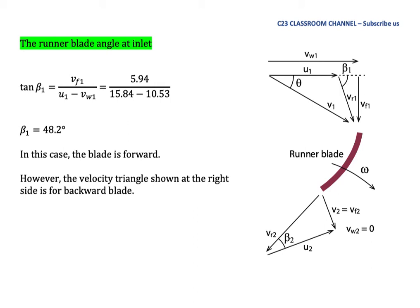Now we are calculating the runner blade angle at inlet. This is our velocity triangle and the runner blade angle is located here. From the velocity triangle, we can write tangent beta 1 is VF1 over Vw1 minus U1.